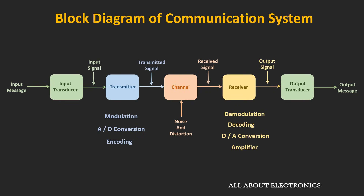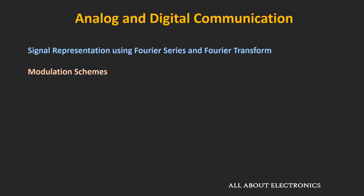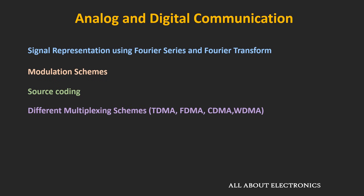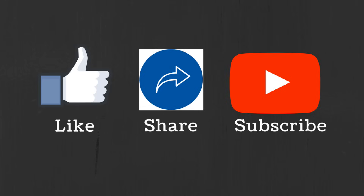In the upcoming videos, we will see how to represent the signal using the Fourier series and Fourier transform, and we will discuss different modulation schemes. In digital communication, we will also see how an analog signal can be digitized and encoded, covering source coding, multiplexing schemes, and different error correction mechanisms. If you have any questions or suggestions, let me know in the comments below. If you liked this video, hit the like button and subscribe to the channel for more such videos.